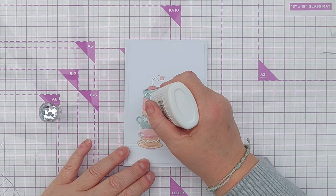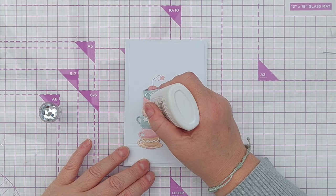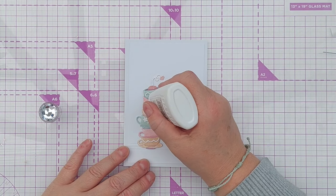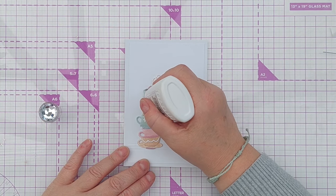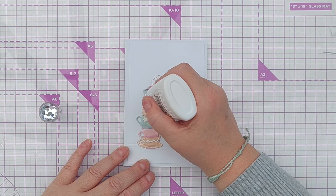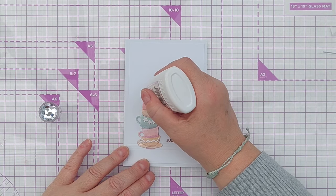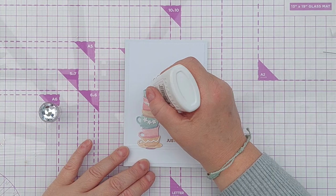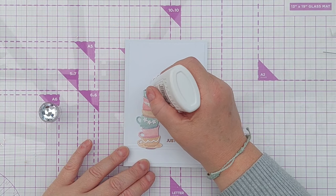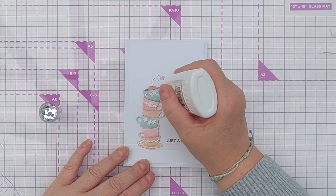I'm going to add crystal glaze to the decorative elements so they're glossy, dimensional, or even more dimensional. I was going to use glossy accents but both of my bottles are currently bunged up. So I need to get a pin and unbung them. But crystal glaze is pretty much the same thing.